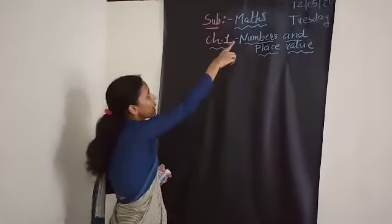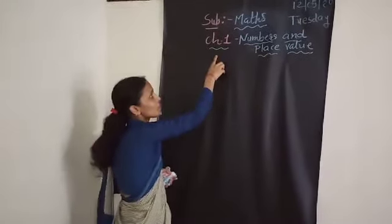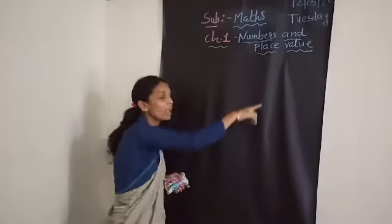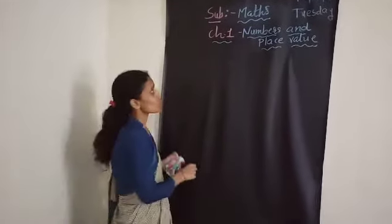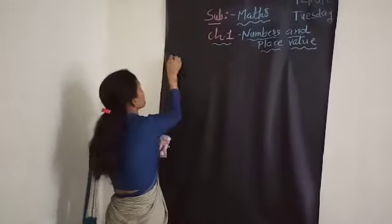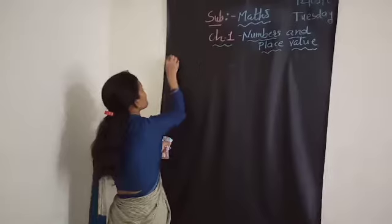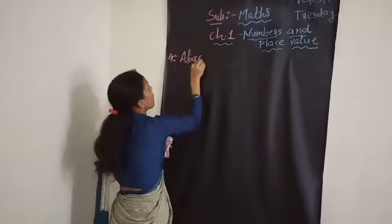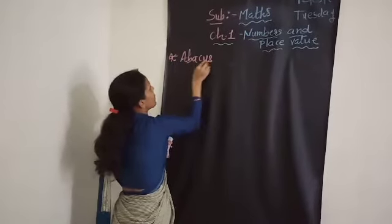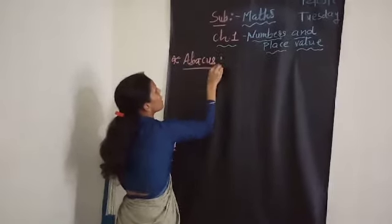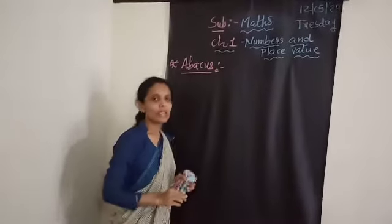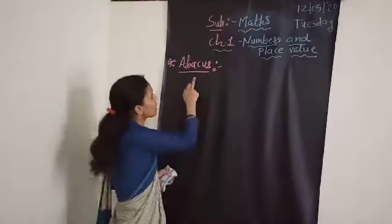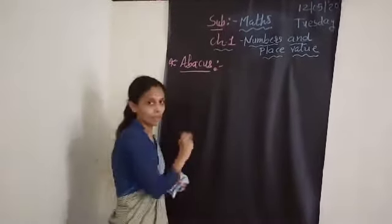Subject: Maths. Chapter: Numbers and Place Value. At the beginning of this chapter, I explained that we learn the place value of a number with the help of an Abacus.